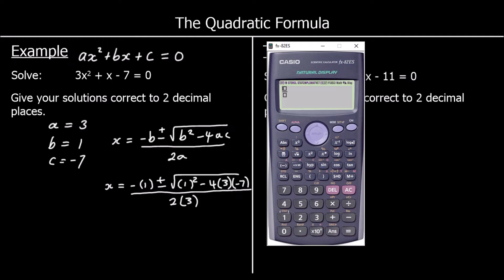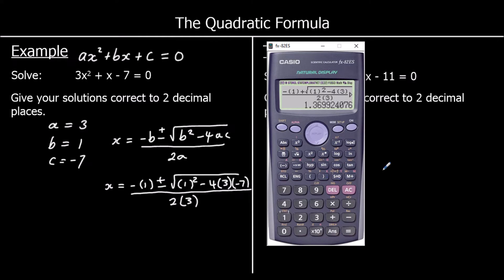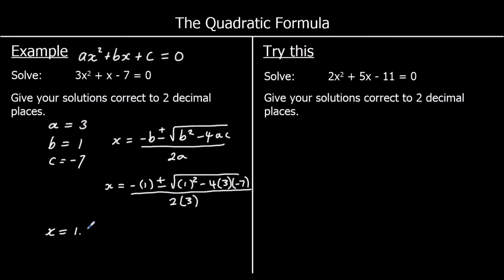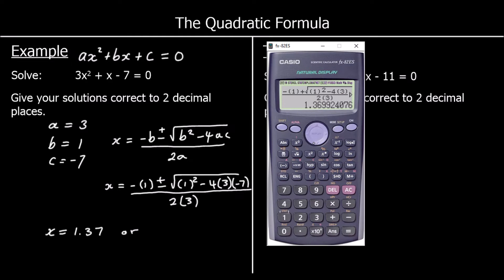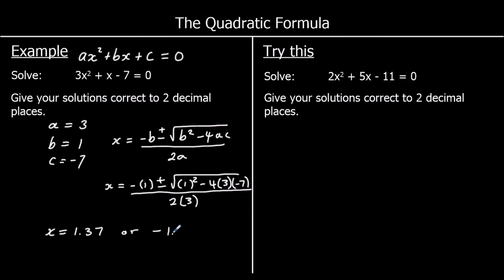I'm going to press the fraction button first. Then on top, minus 1, and I'm going to do a plus first — so plus the square root of 1 squared minus 4 times 3 times negative 7, over 2 times 3. So press equals and we get our first answer — to two decimal places, that's 1.37. So x is equal to 1.37. Or, if we change the plus to a minus, our second answer is negative 1.70.